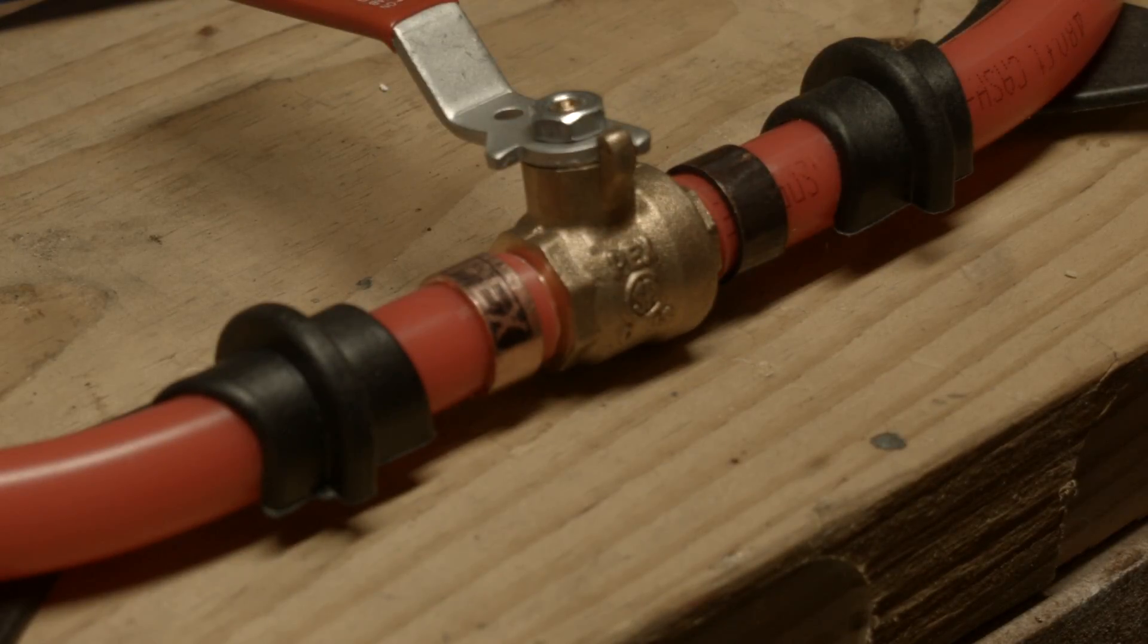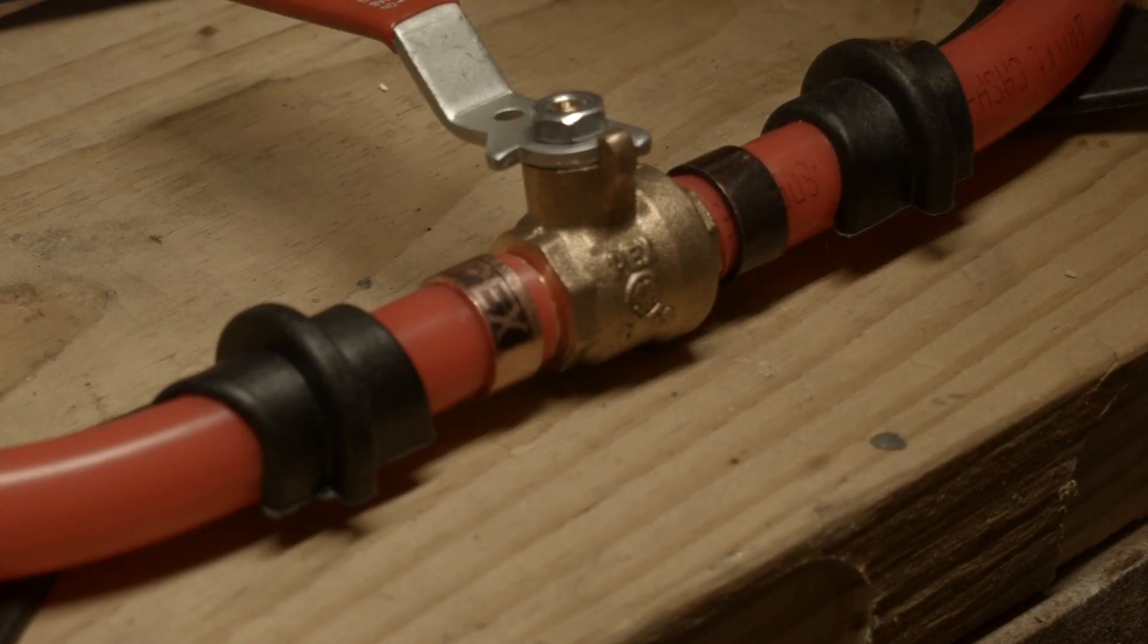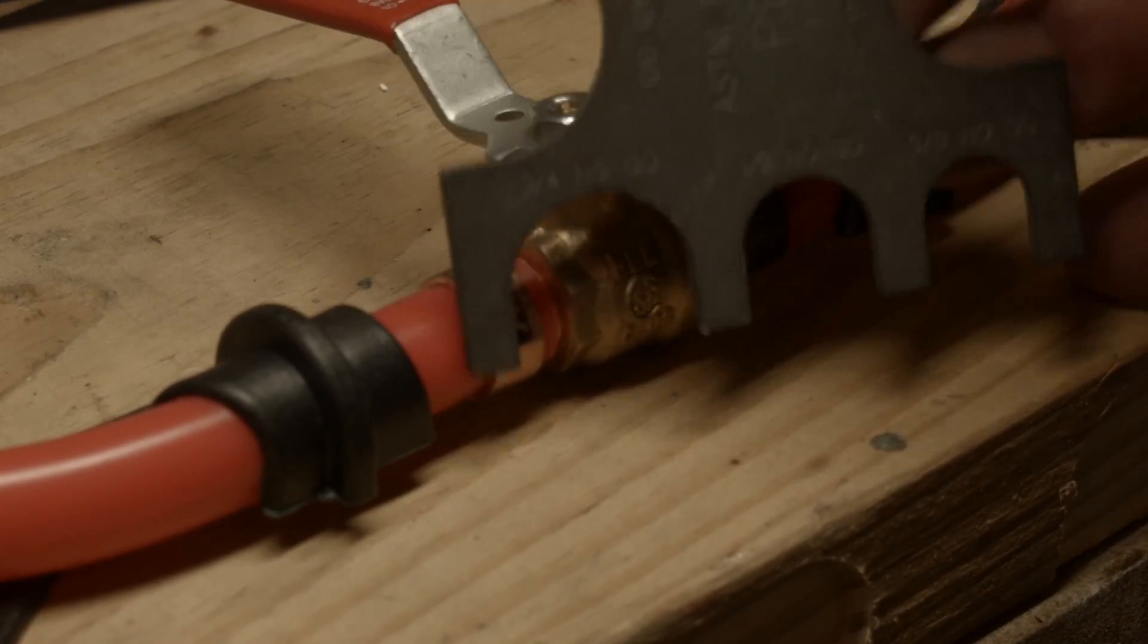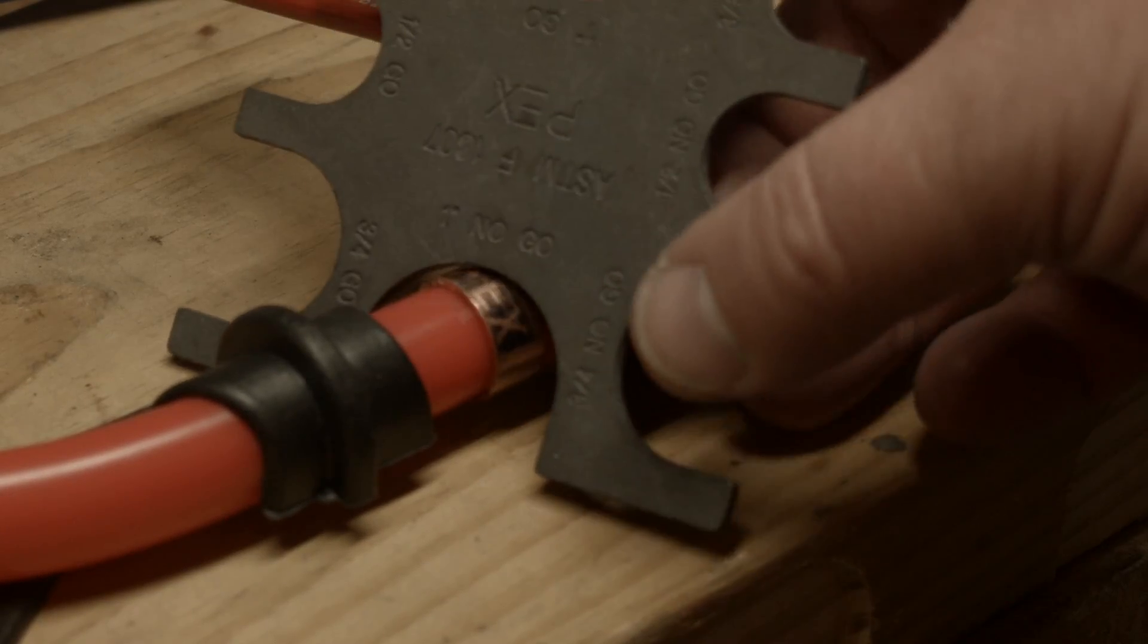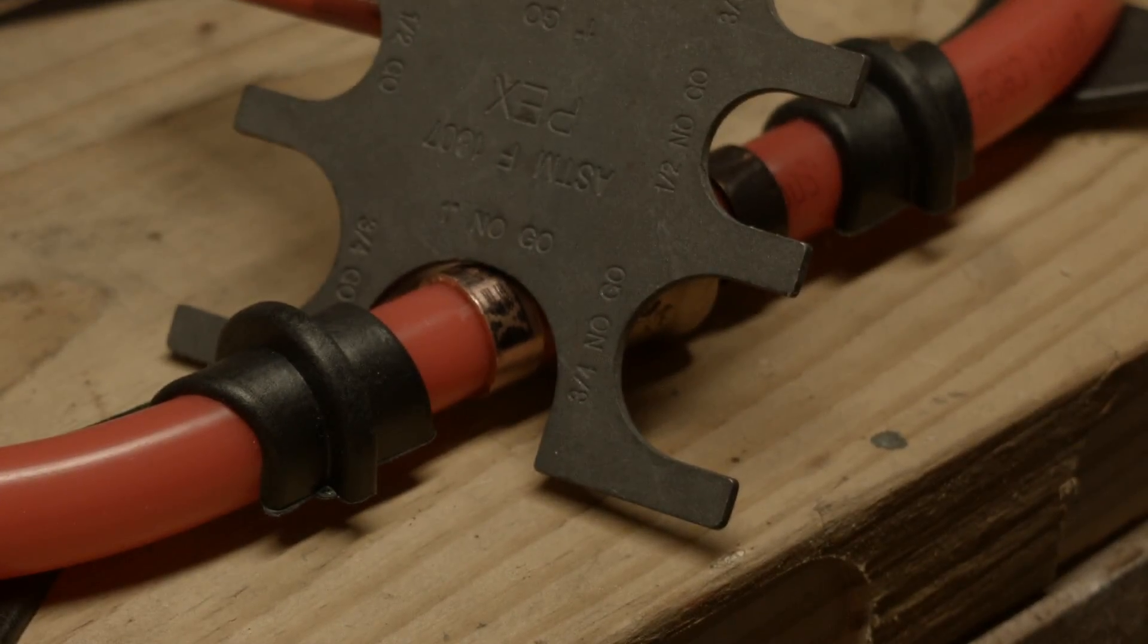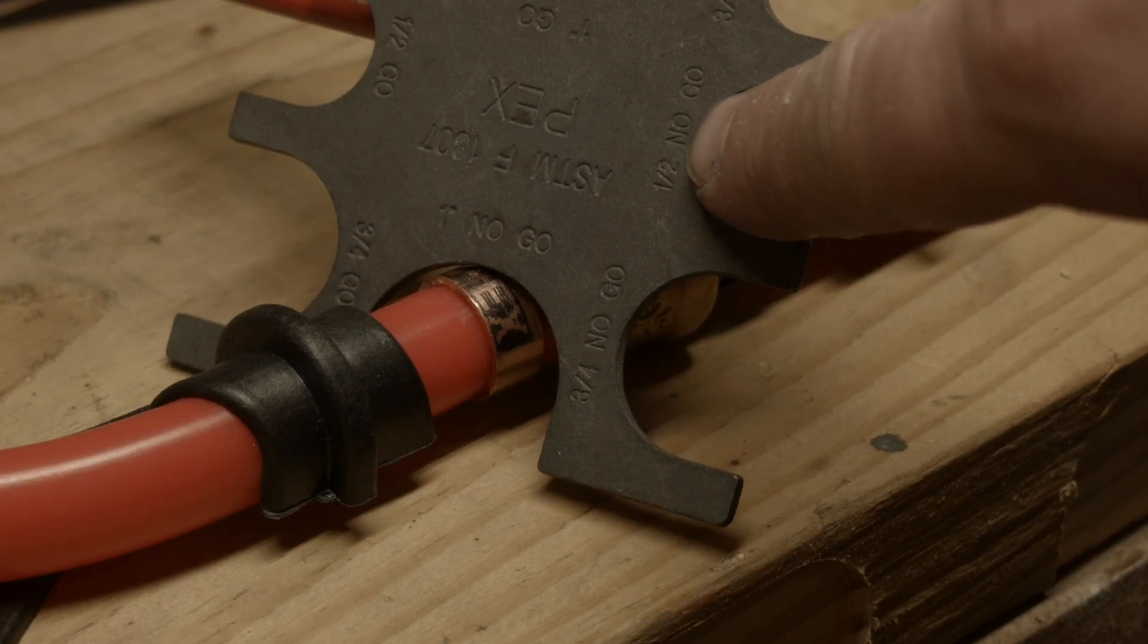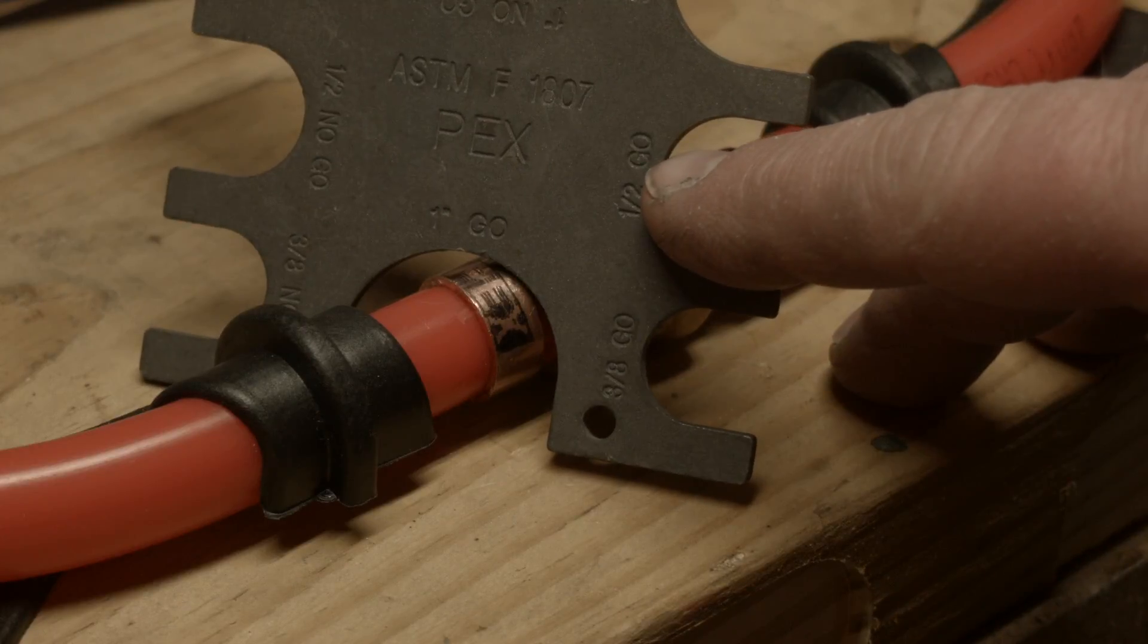To make sure the compression is successful, you use a gauge. The gauge has markings on it. For a half-inch pipe, it's the center one. There's one that says no-go—here, half-inch no-go. And on the other side is half-inch go. There it is.